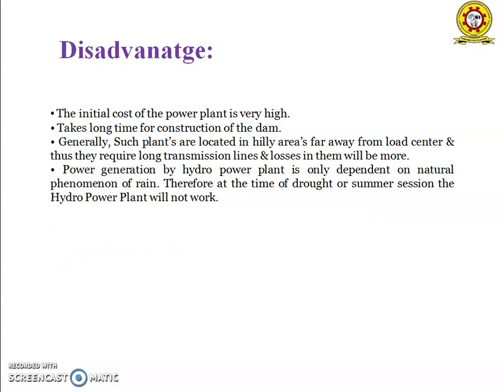Disadvantages: The initial cost of the plant is very high and it takes a long time for the construction of the dam. Generally, such plants are located in hilly areas far away from the load centers, and thus require long transmission lines with higher losses. The generation of power in a hydroelectric power plant is dependent only on the natural phenomenon of rain. Therefore, at the time of droughts or summer season, the hydro power plant will not work.